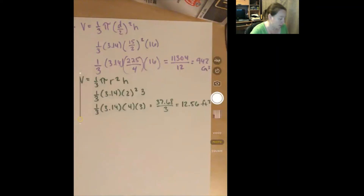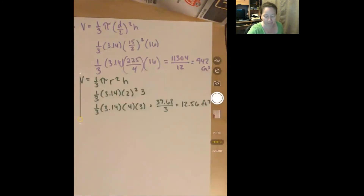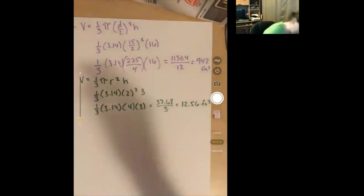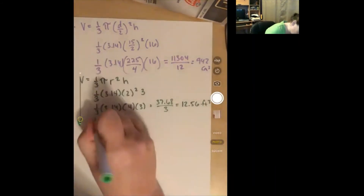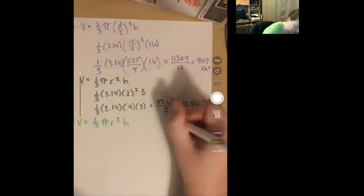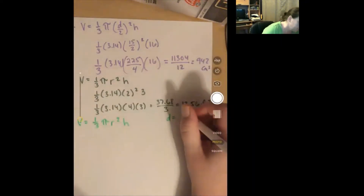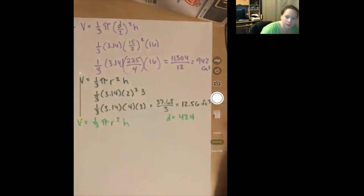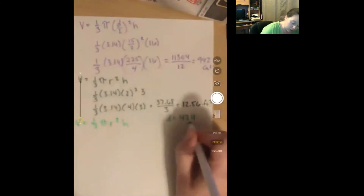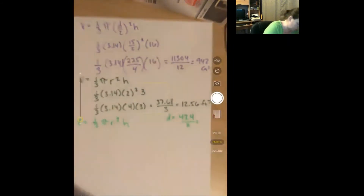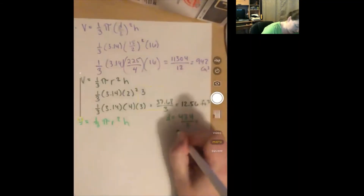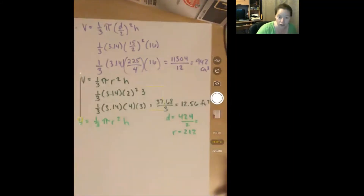Number 5: the cone of the volcano Paricutín in Mexico had a height of 410 meters and a diameter of 424 meters. Find the volume of the cone to the nearest tenth, using 3.14 for pi. Volume equals one-third pi r squared h. The diameter is 424, so dividing by 2 gives us a radius of 212. Plugging in: one-third times 3.14 times 212 squared times 410.